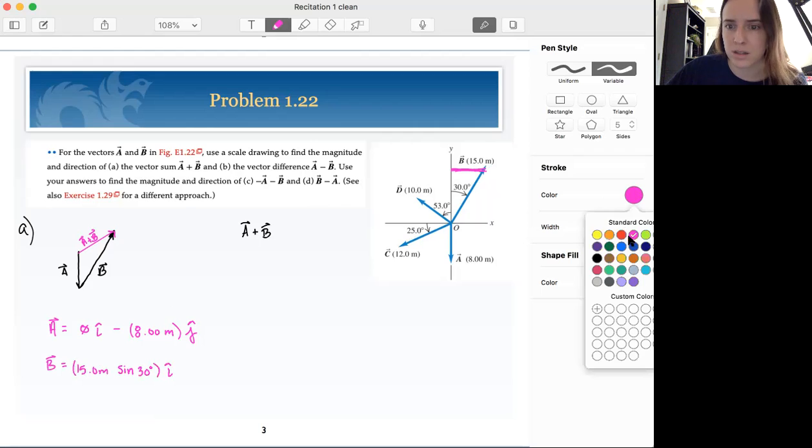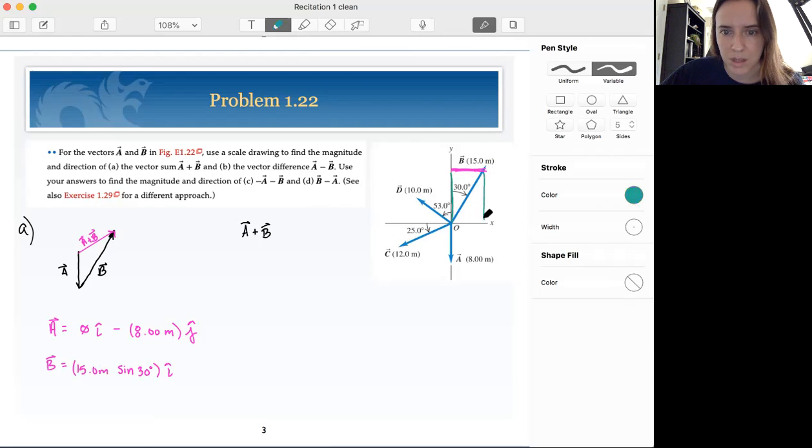All right, let's change to little color. Let's do green. Okay, so now we want to look at the y component of B. So what we're really doing here is we're finding out the the legs, the length of the legs that triangle makes. So our y component here is going to be our 15 meters. 15.0 meters. And that's going to be cosine of 30 degrees.